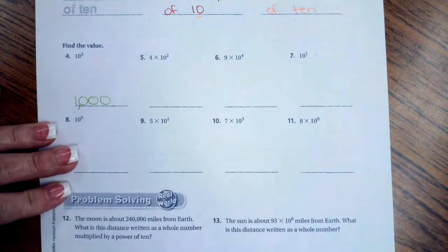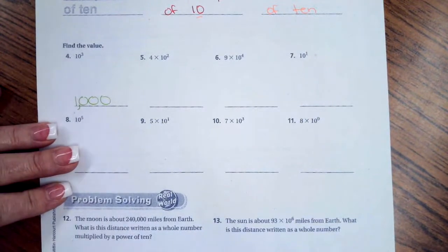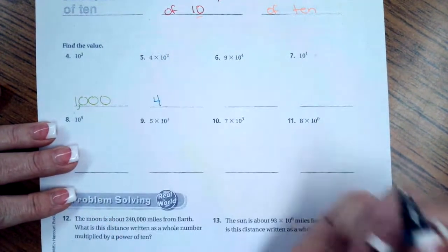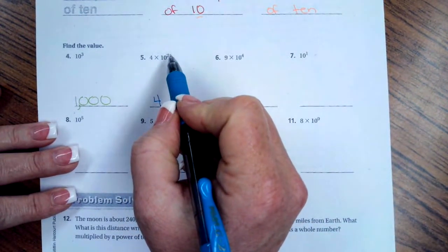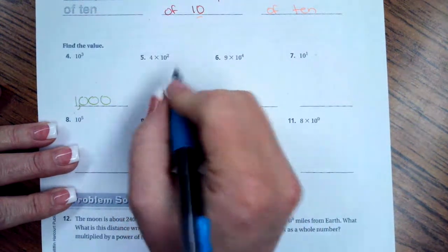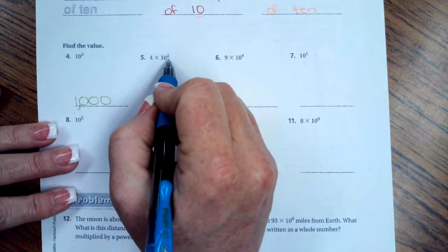On these problems it's a little bit different because we have a four, but then we just have ten to the power of two, which means we're going to be multiplying that by 100, because 10 × 10 is 100.